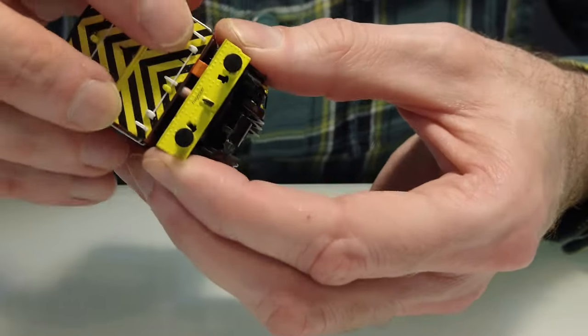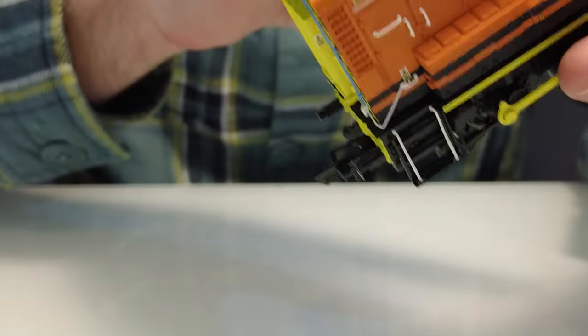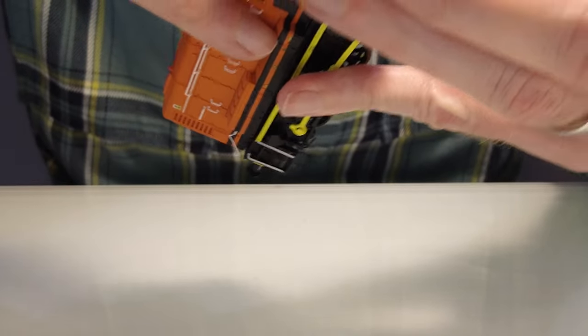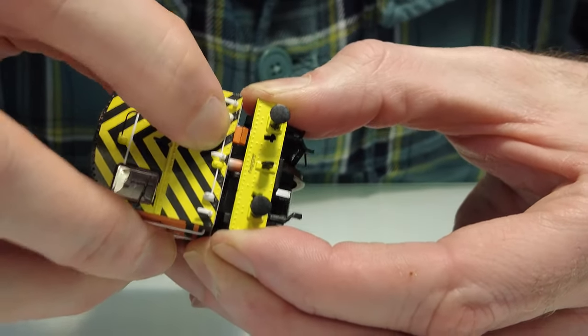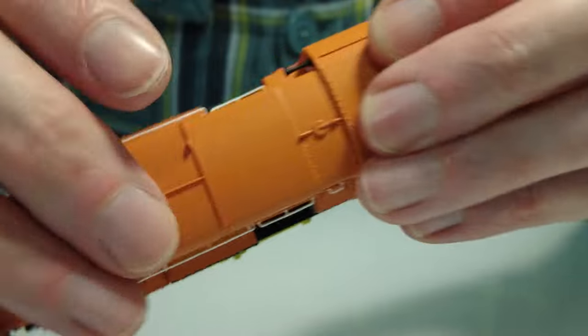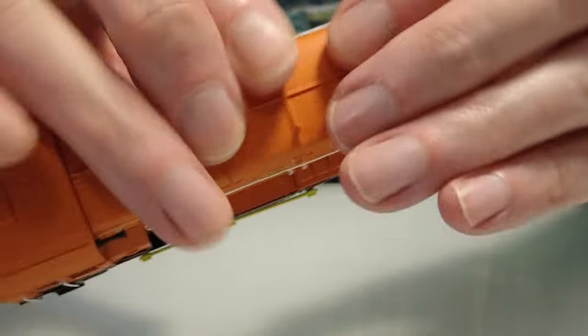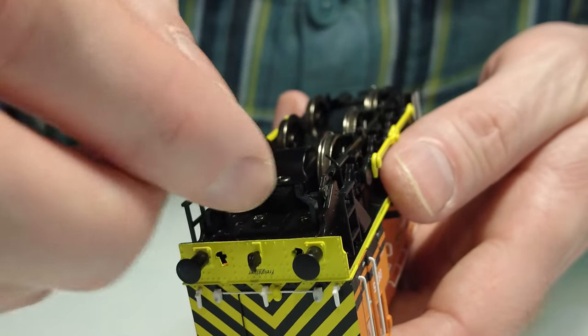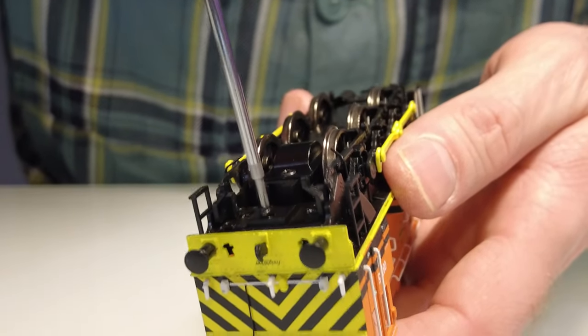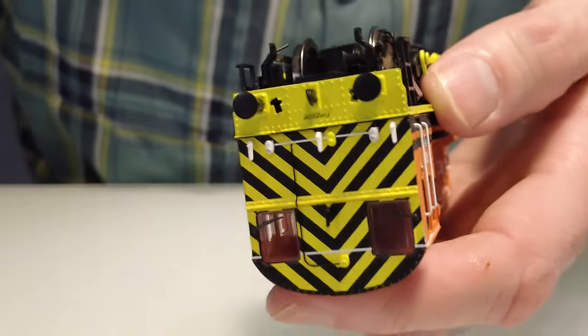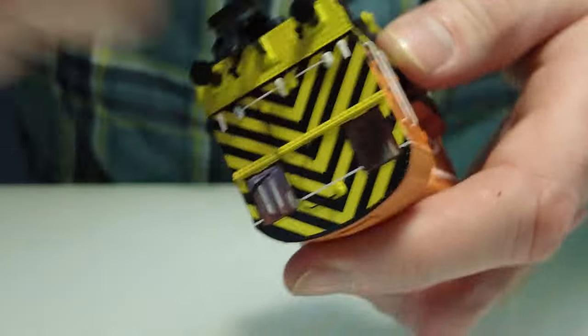So now it's just a case of getting the front little clip back in, which sits just under the buffer beam. Make sure that sits underneath. And then push it down at the back. You have to just push the back of the cabin slightly to make sure the clip goes under. And then push down till it clicks. If you've lost your clip, the screw will hold it. So I'm going to put the screw back in now. And the coupling. And that's it.